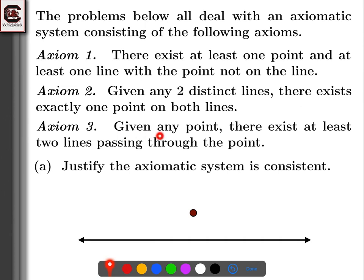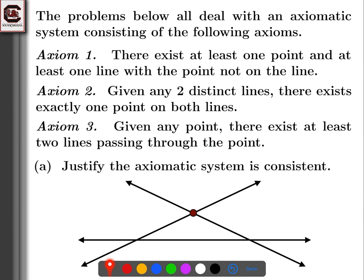The third axiom says given any point, there exist at least two lines passing through the point. So we have to add two lines to this picture passing through the point. Now given any two distinct lines, there exists exactly one point on both lines. Maybe not — we need these two lines to have something in common and these two lines to have something in common. So we'll go for the obvious points here and add those two points.